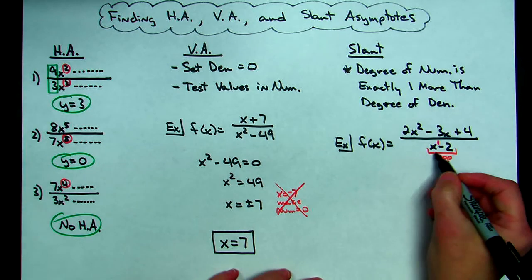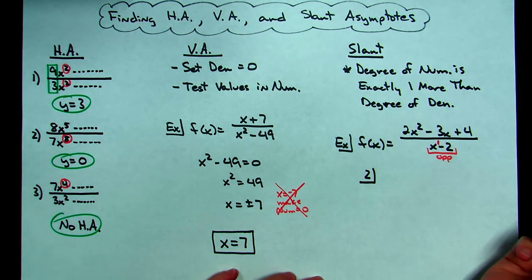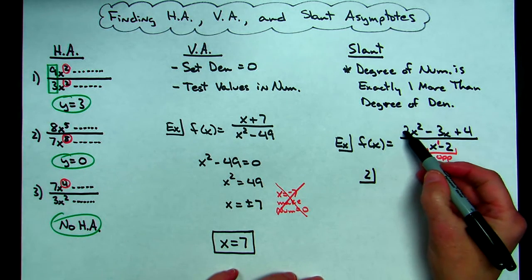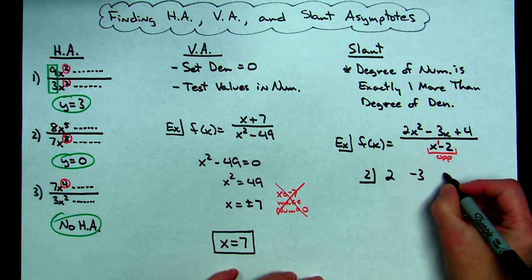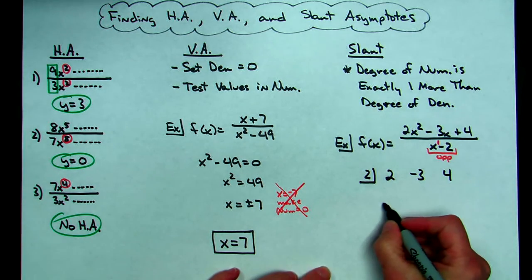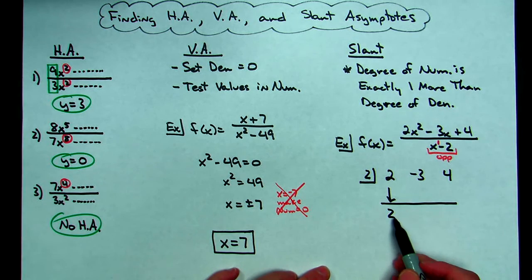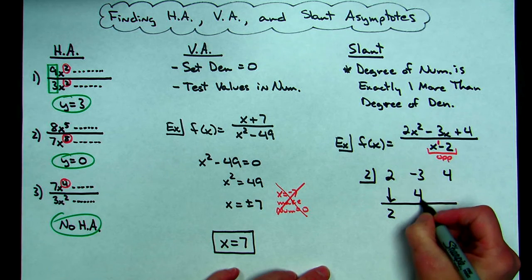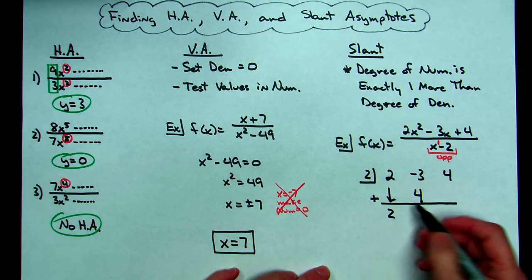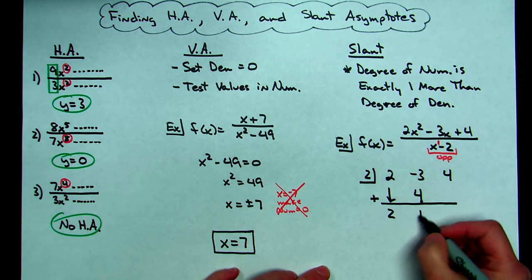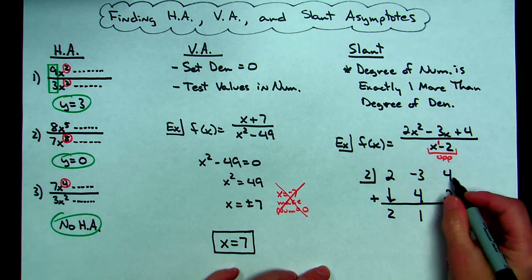So since that's a minus 2, I need to put a positive 2 inside my synthetic division box. Then I'm going to take my coefficients and write them all down. So 2, negative 3, 4. Recalling synthetic division, the 2 comes straight down. You multiply 2 times 2 is 4 and put that answer right there. You're always adding going down, so I'm going to put the little plus sign there. Negative 3 plus 4 is going to give me a 1. 1 times 2 is going to give me a 2. 4 plus 2 is going to give me the 6 right there.